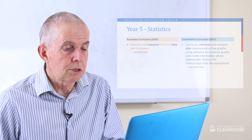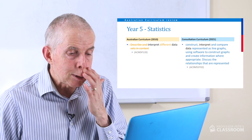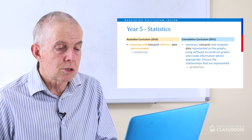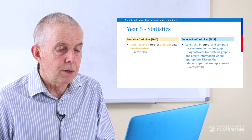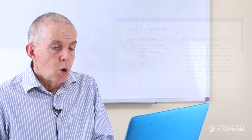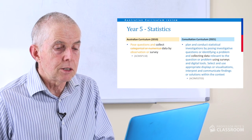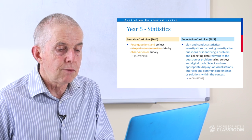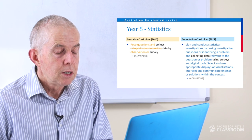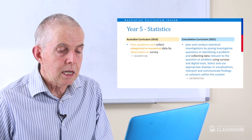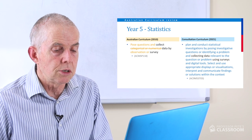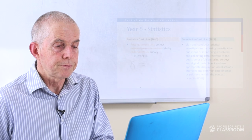The second statistics content descriptor for Year 5: construct, interpret, and compare data represented as line graphs using software to construct graphs and create information where appropriate. Discuss the relationships that are represented. Well done. And the last one — one of the longest: plan and conduct statistical investigations by posing investigative questions or identifying a problem and collecting data relevant to the question or problem using surveys and digital tools. Select and use appropriate displays or visualisations. Interpret and communicate findings or solutions within the context. And we're done.